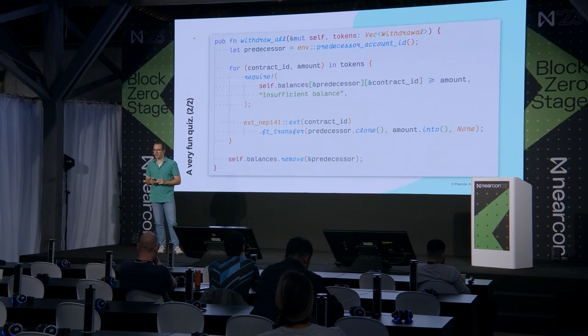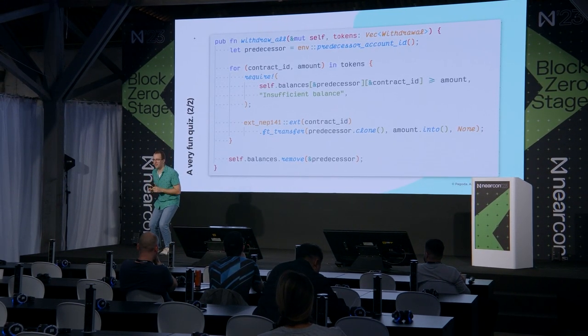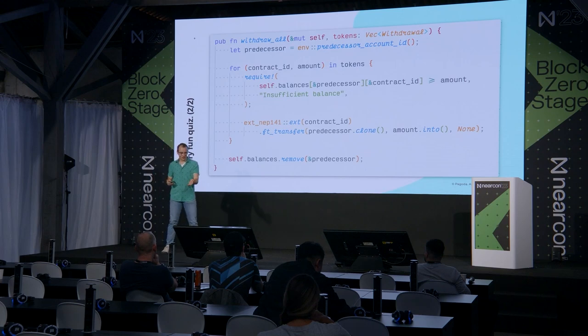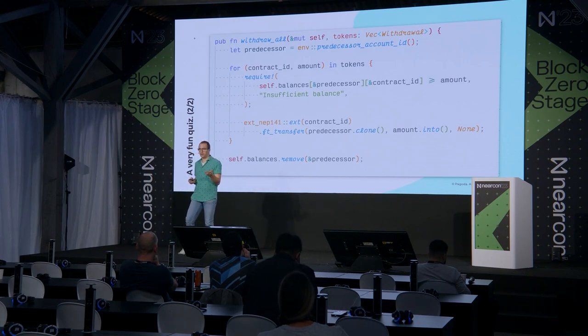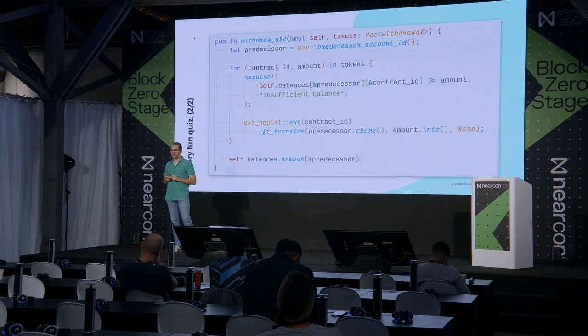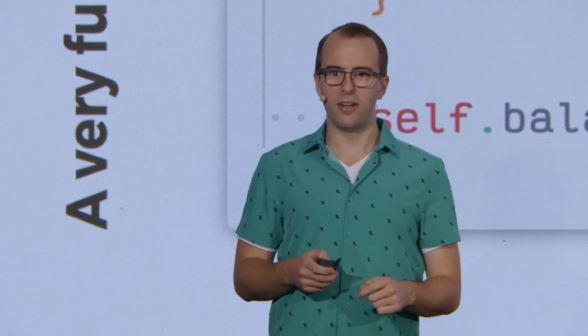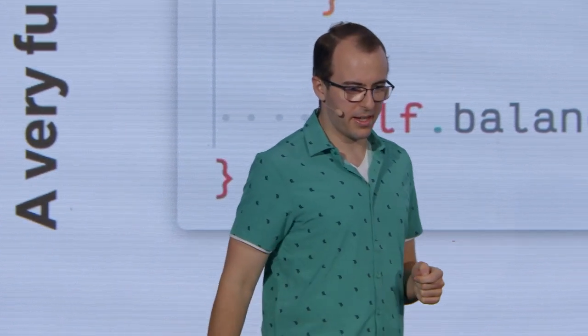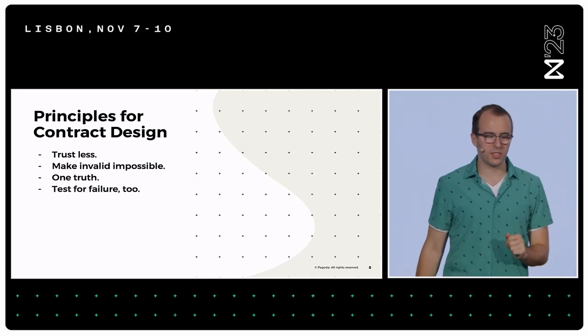It could be used to repeatedly withdraw those tokens. That's exactly correct. If I specify that I want to withdraw — say I have legitimately deposited 10 USDC into this contract — and I say I want to withdraw my 10 USDC but I specify USDC 30 times in my list of tokens, I will be able to withdraw way more tokens than I am entitled to. Hopefully that got you into a security mindset. Let's talk about some principles for secure smart contract design.